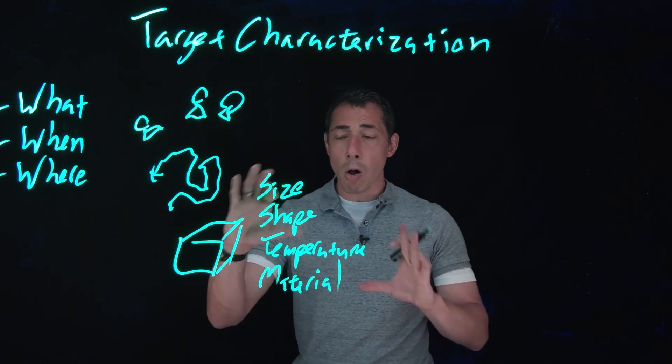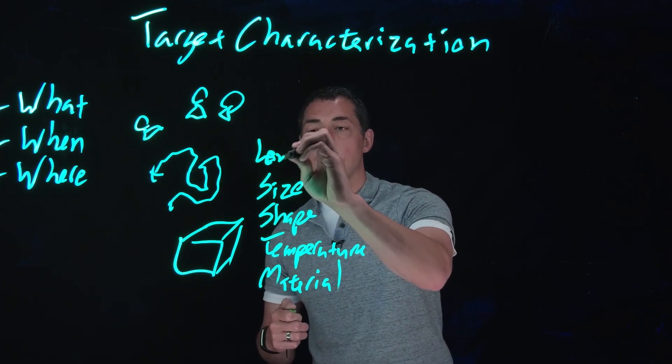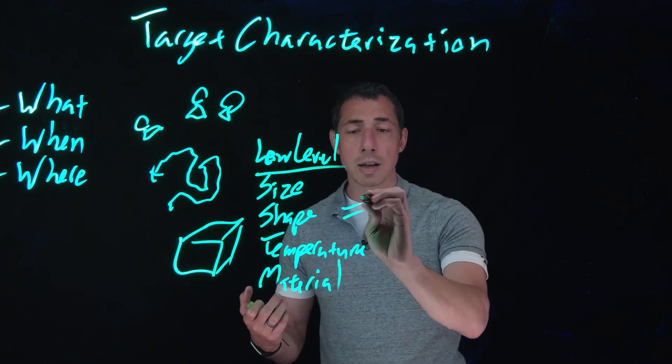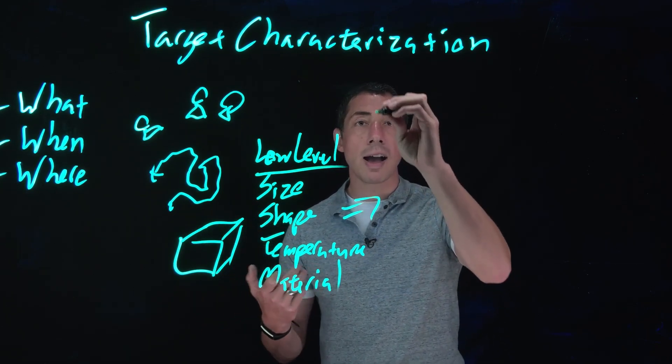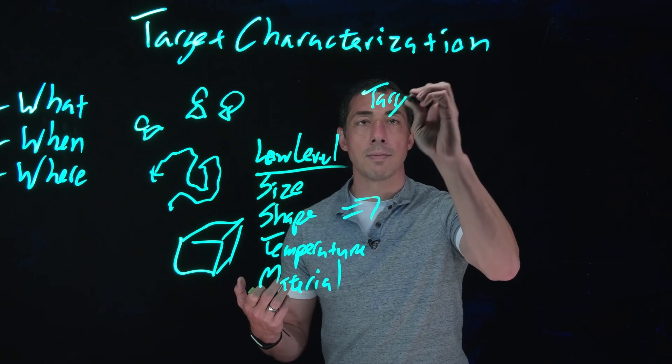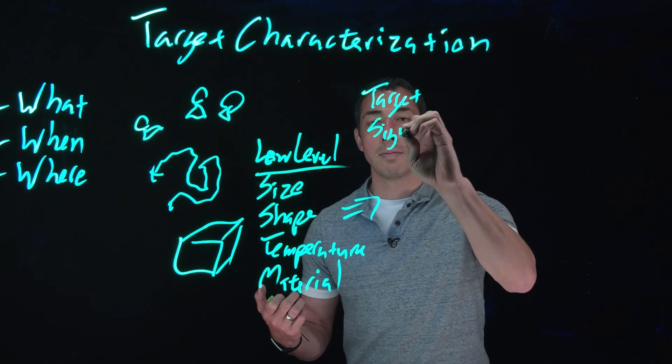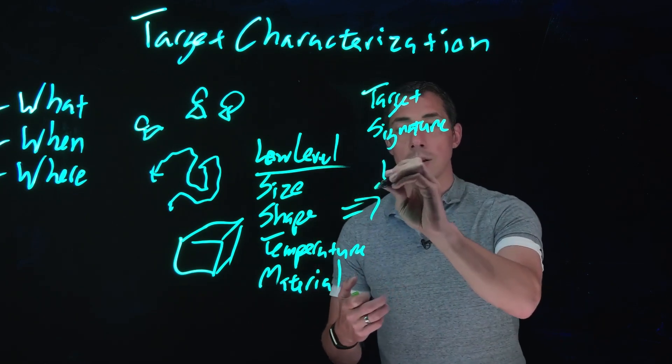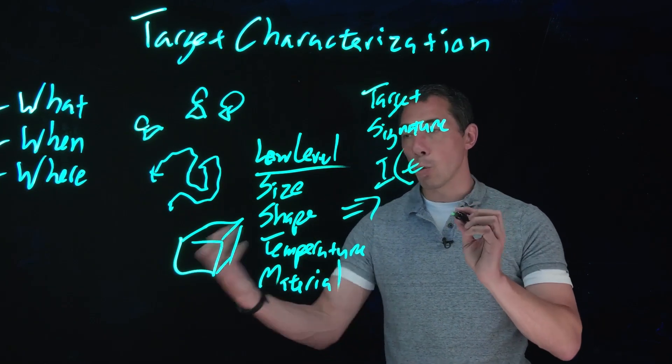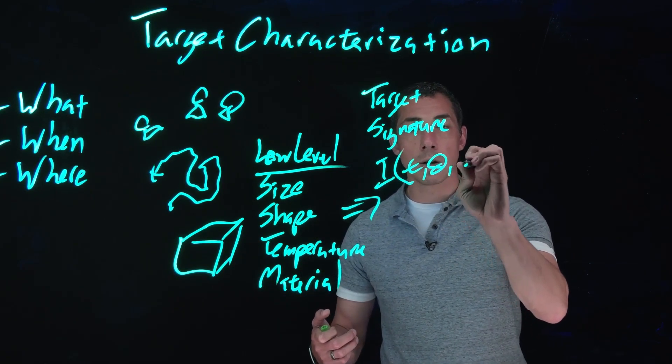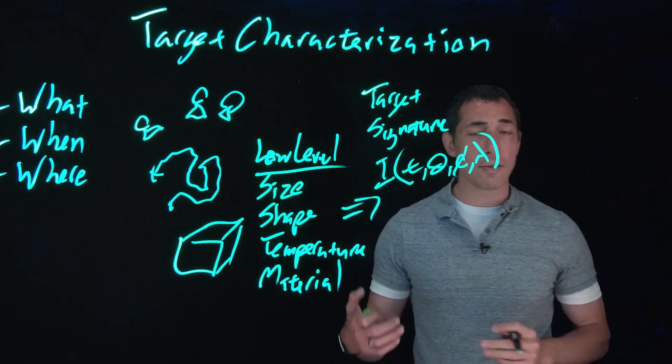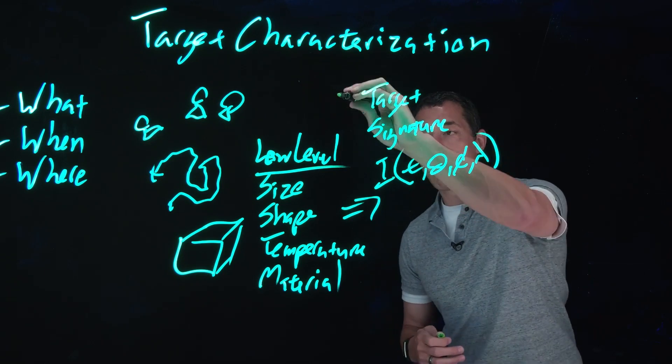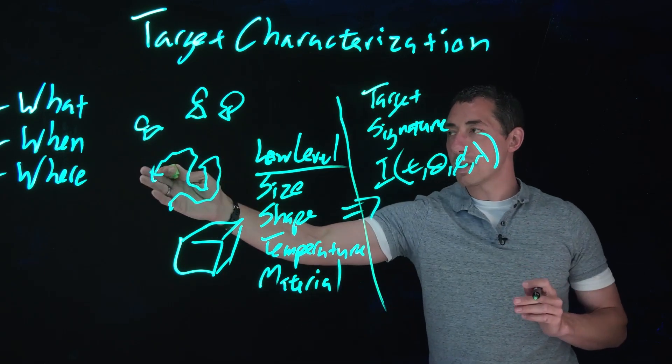And all of these low-level parameters feed into a radiometric tool to generate a high-level target signature. And that's a function of time, what time are we talking about, what angle are we looking at this from, and then what spectral wavelengths of interest are we looking at.